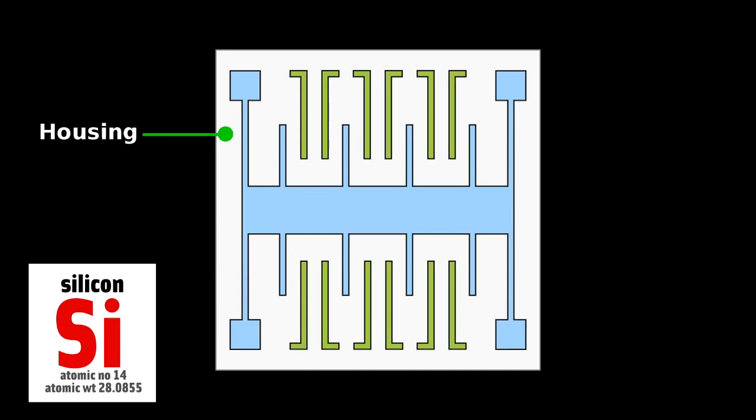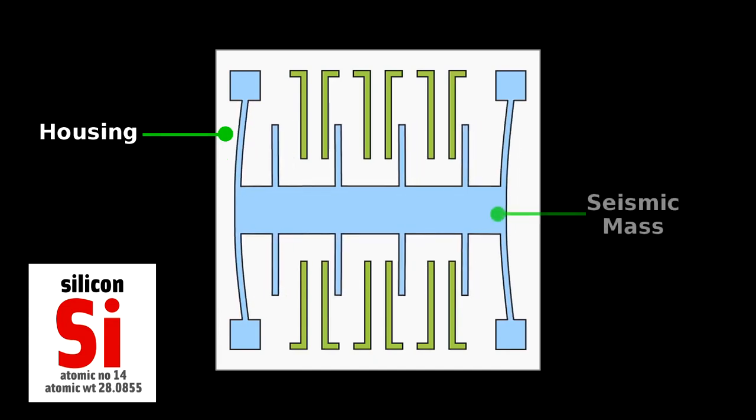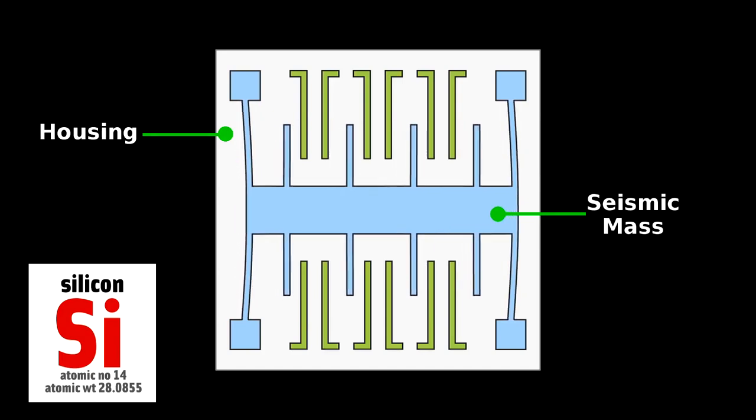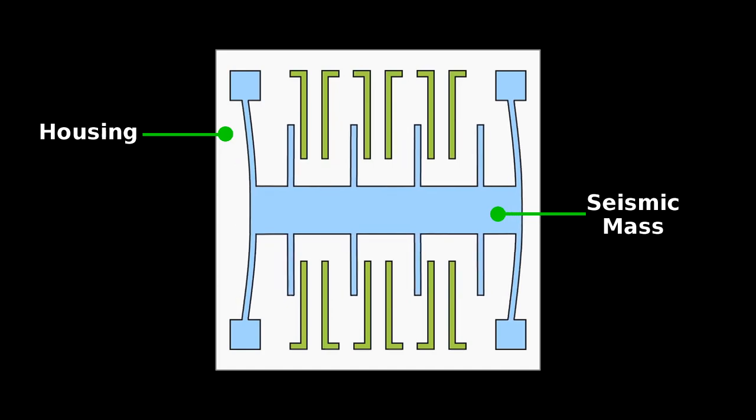It has, of course, a housing that's fixed to the phone, and a comb-like section that can move back and forth. That's the seismic mass equivalent to the ball. The spring, in this case, is the flexibility of the thin silicon tethering it to the housing.